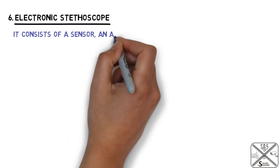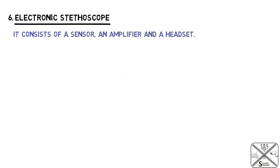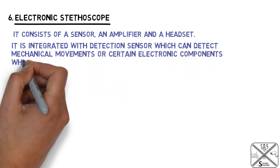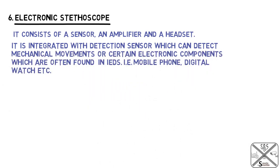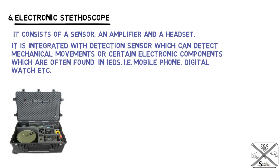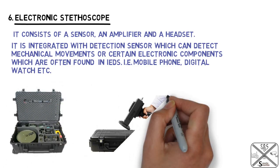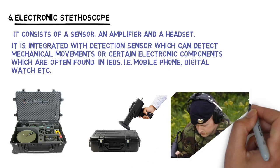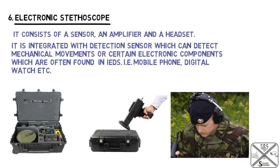Next is the electronic stethoscope. It consists of a sensor, an amplifier, and a headset. It is integrated with a detection sensor which can detect mechanical movements or certain electronic components often found in IEDs, such as mobile phones and digital watches. It can detect mechanical movements through walls, bricks, glass, and wood. Signals received by the sensor are fed to the amplifier with stepless adjustable filters, which make the signals audible in a headset.